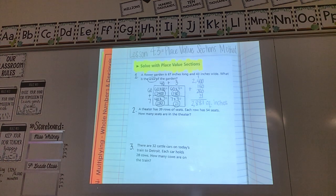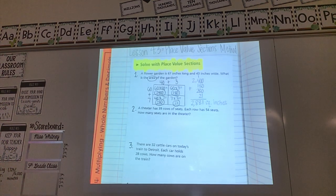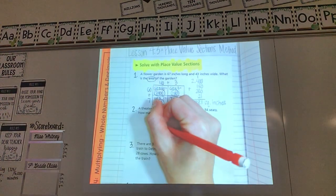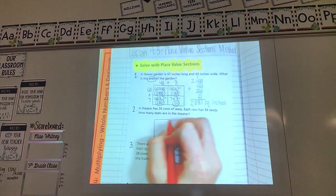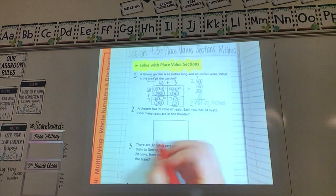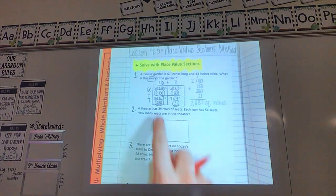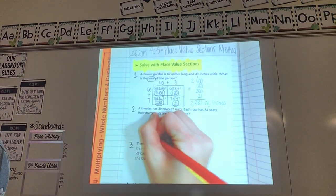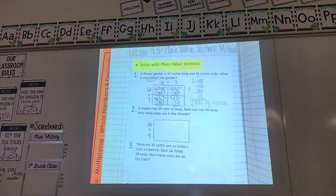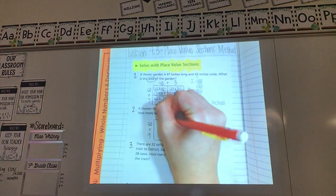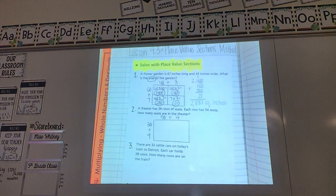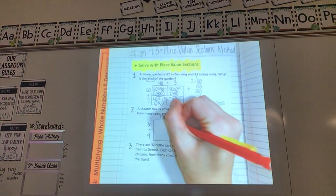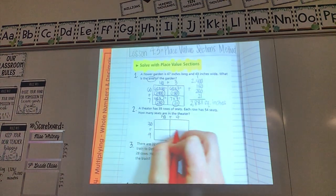So number two. A theater has 39 rows of seats. Each row has 54 seats. How many seats are in the theater? All right. We know we have to use place value sections today. So we need to draw our box. It's the only choice I have today. My first number is a 39. How do I break up 39? 30 plus 9. My other number is a 54. How do I break up 54? 50 plus 4. What do I do at each of my plus signs?